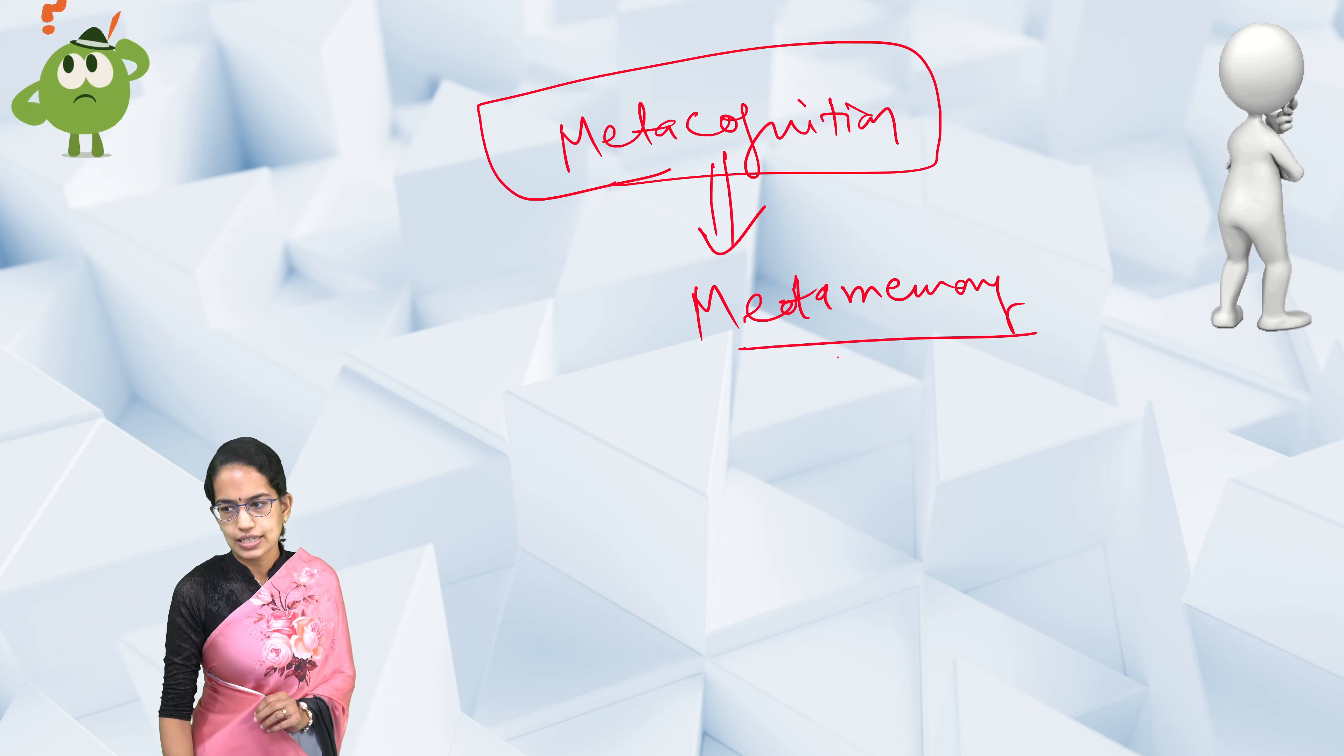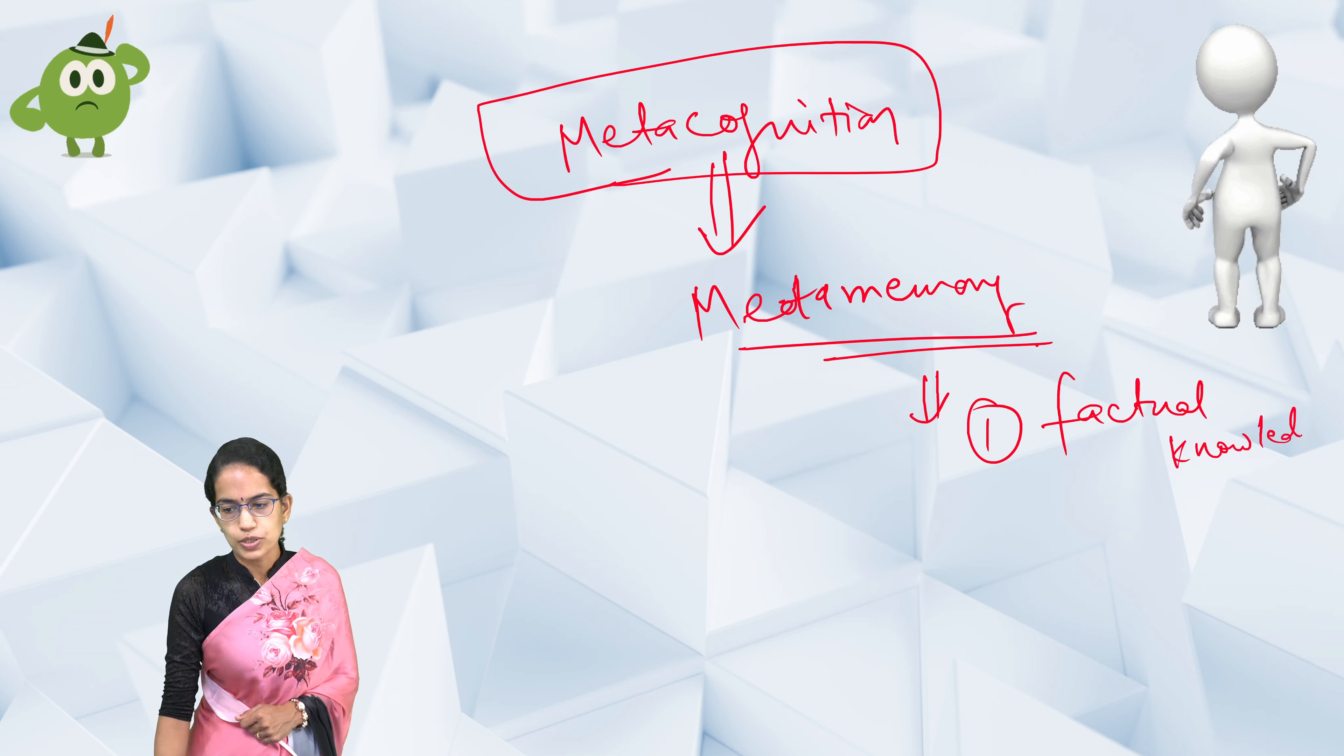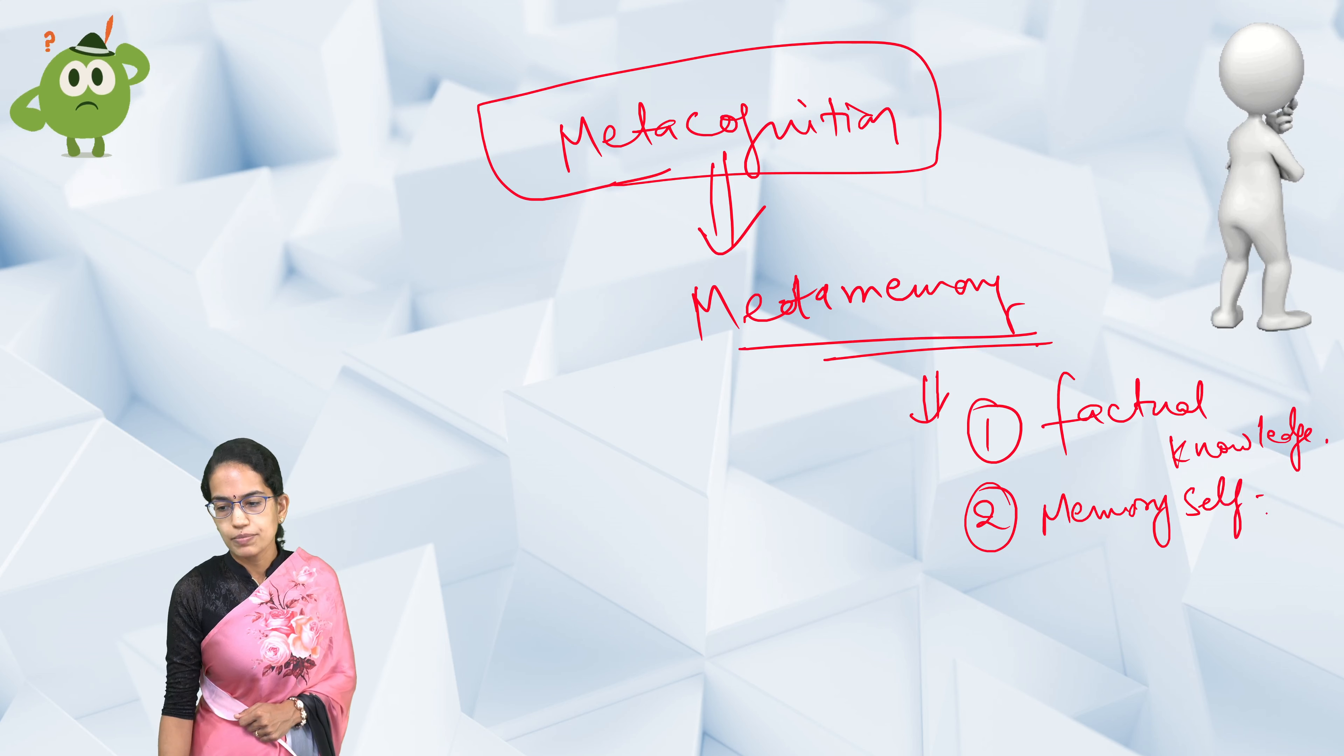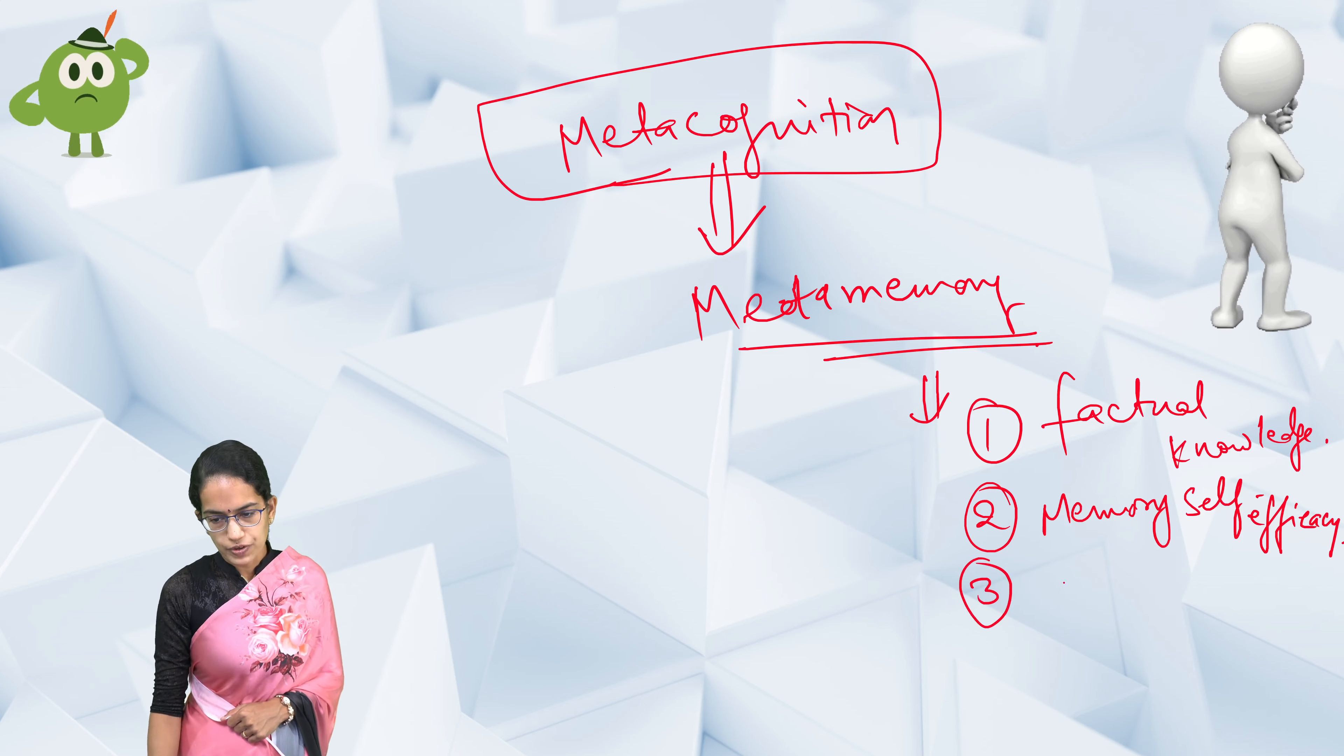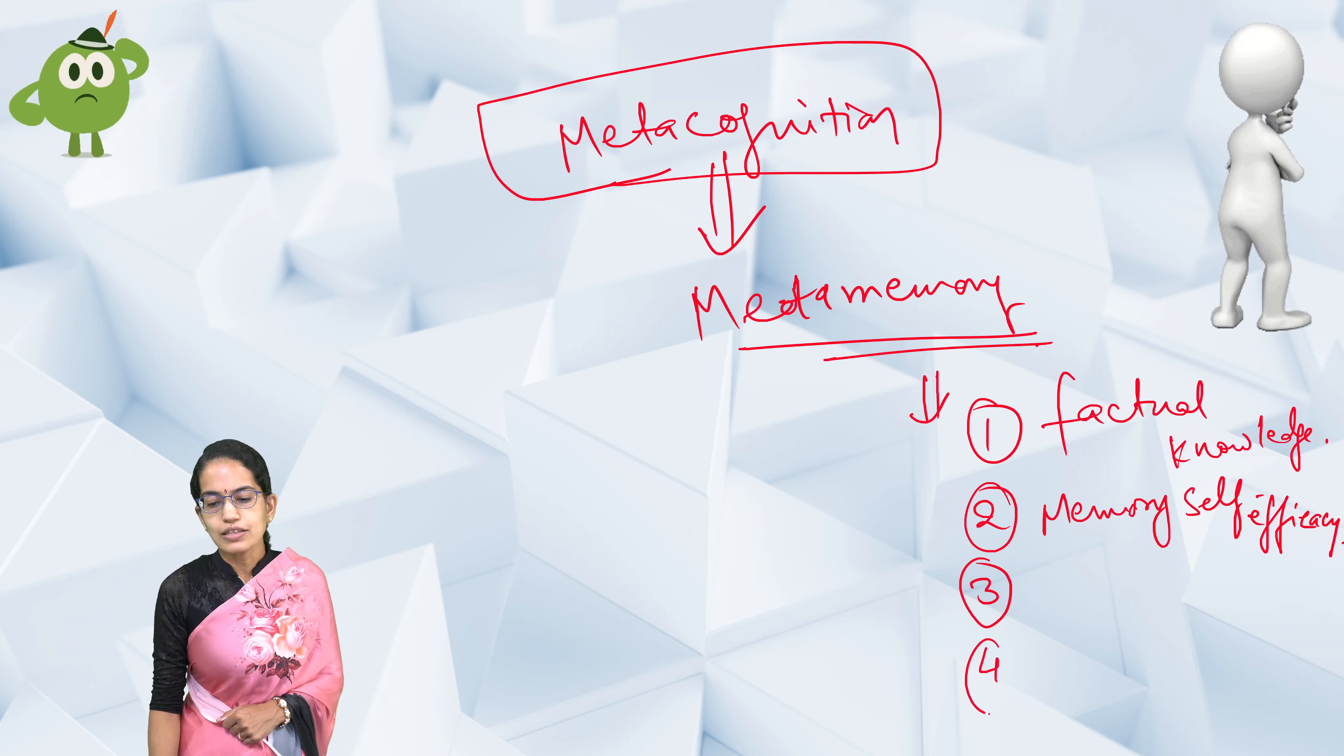Now, metamemory has certain characteristics. Firstly, it focuses on factual knowledge—whatever is factual knowledge about the memory task, about the thoughts, about the process in the thoughts. Second, it focuses on memory self-efficacy: how good is memory and how much we can actually demand in memory requirements. Next is memory-related effects, which talks about memory-demand generating situations. And finally, we can monitor it.